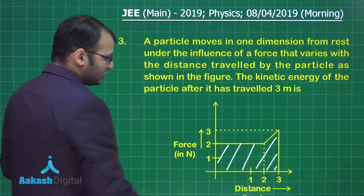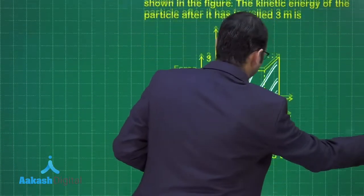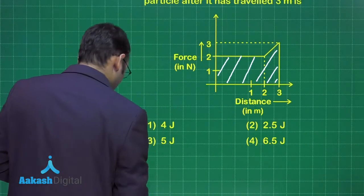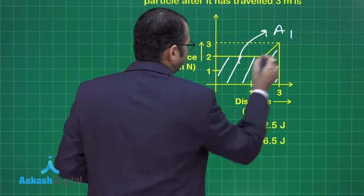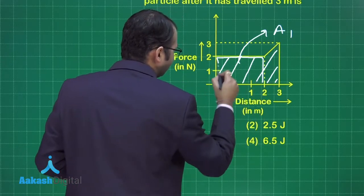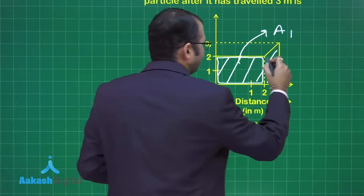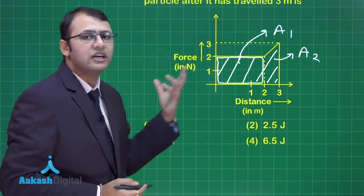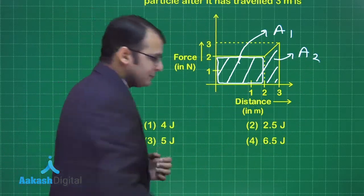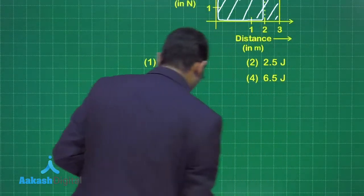You are very well aware that area under the curve for force and position graph gives the work done on the particle, and that work done equals the gain of kinetic energy as per the work energy theorem. So I simply have to calculate the area under this curve. For the solution, we have area 1, this rectangular portion, and we have a trapezium which is area 2.